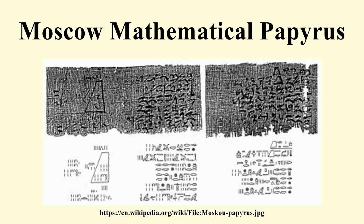It is a well-known mathematical papyrus along with the Rind Mathematical Papyrus. The Moscow Mathematical Papyrus is older than the Rind Mathematical Papyrus, while the latter is the larger of the two. The problems in the Moscow Papyrus follow no particular order, and the solutions provide much less detail than those in the Rind Mathematical Papyrus.